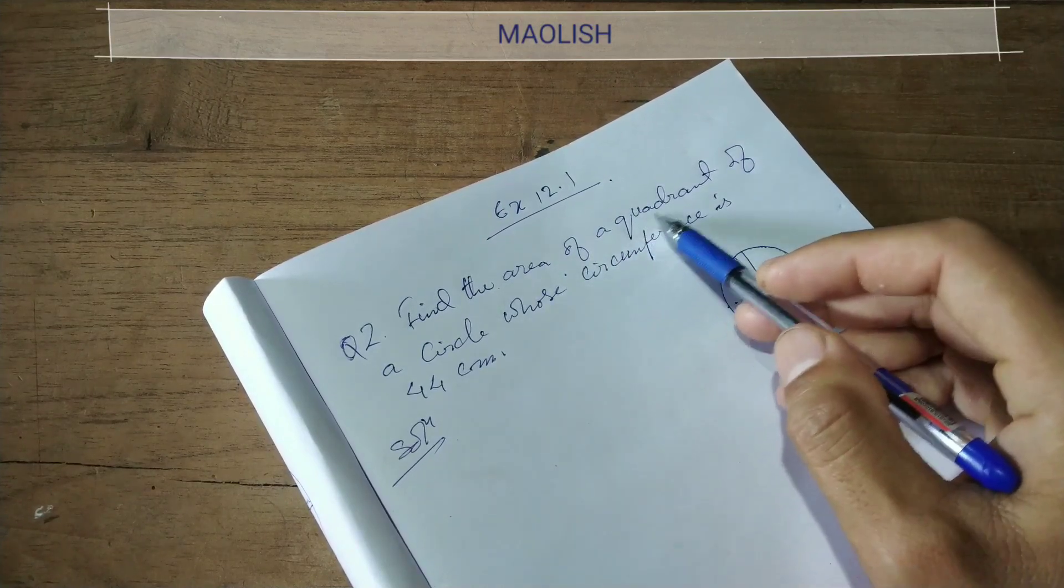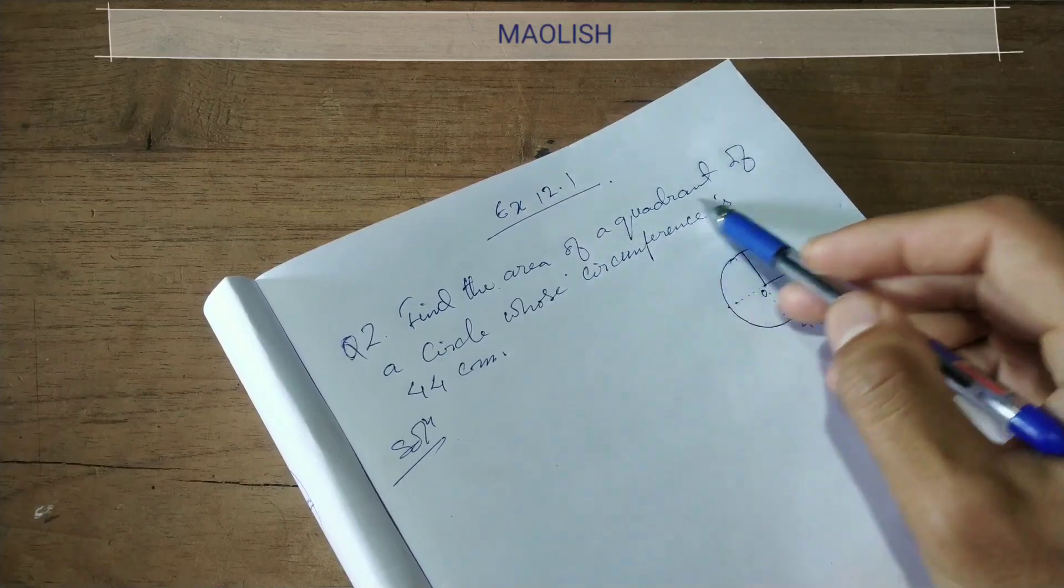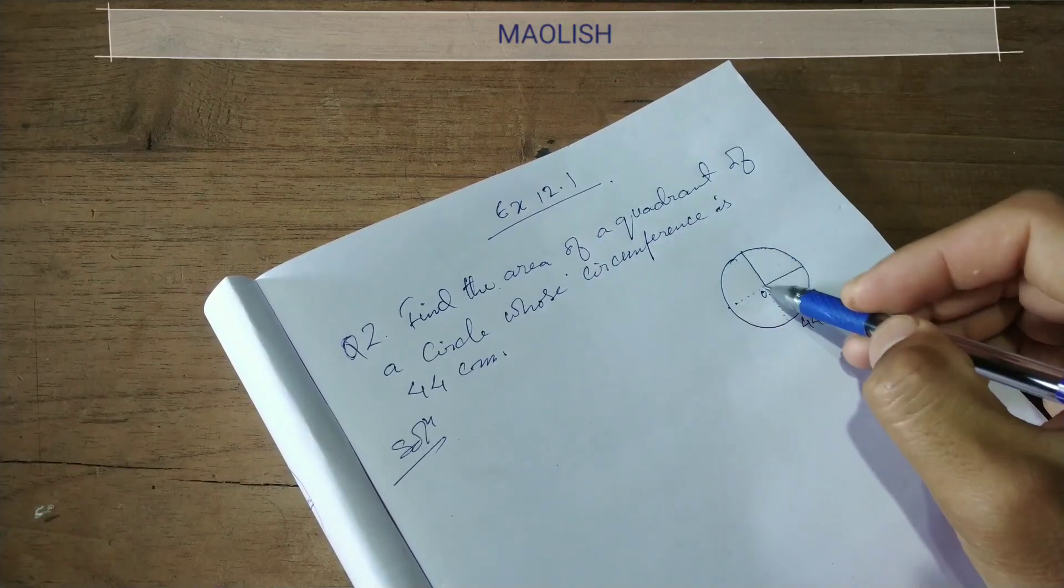Area of a quadrant of a circle. Quadrant - one by fourth.